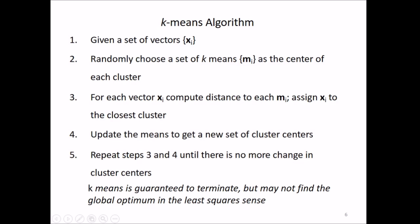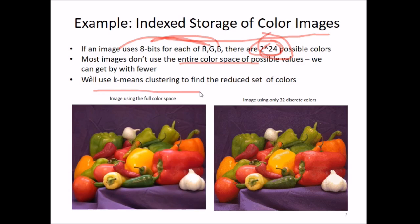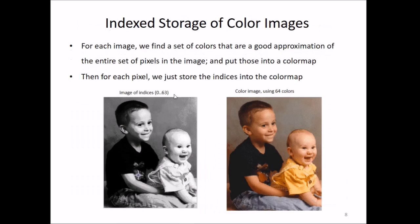This is an example of indexed storage of color images. For an 8-bit color image, we have 8 bits for R, 8 bits for G, 8 bits for blue - that means 2 to the power 24 possible colors. Most images don't require the entire color space. We can get by with fewer colors. We use k-means clustering to find a reduced set of colors. This is an example of an image using the full color space, and this is an image using only 32 discrete colors. There is not much difference, and storage space is greatly reduced.